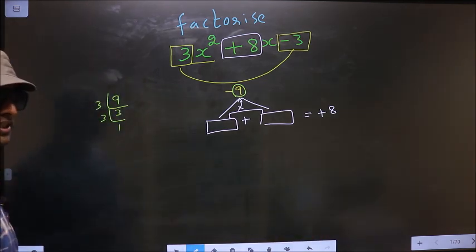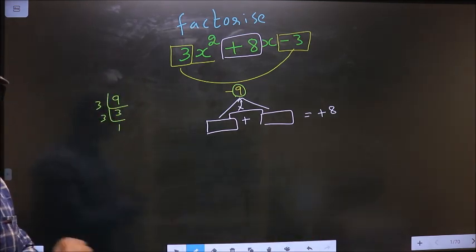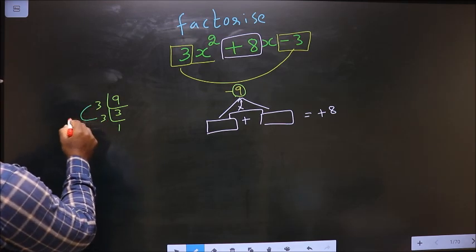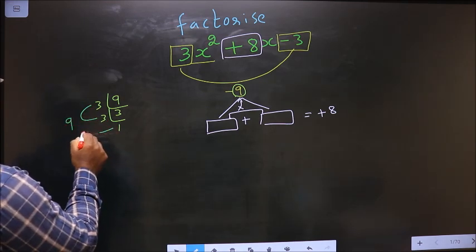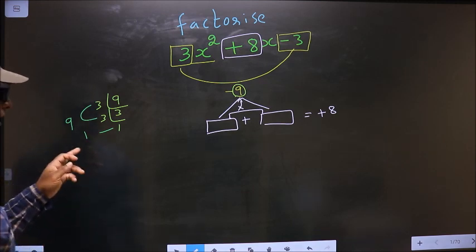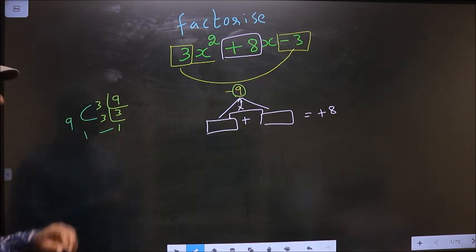So now, the 2 numbers should be 3 into 3, which is 9, and the second number is 1. 9 into 1 is 9, 9 minus 1 is 8.